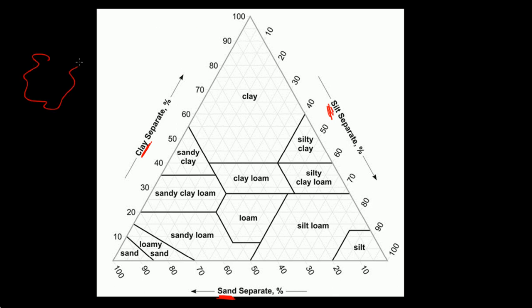If you had a sample of soil and you knew how much percent of the soil was clay, how much percent was silt, and how much percent was sand, you could use this texture triangle to figure out what the general soil type is in this sample.